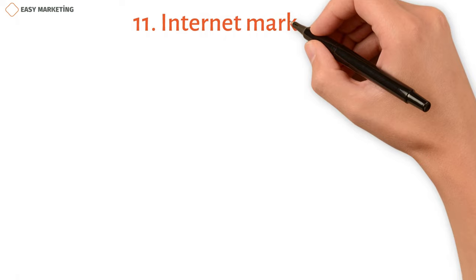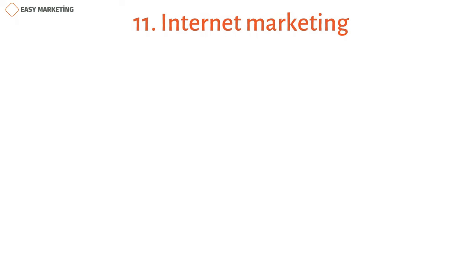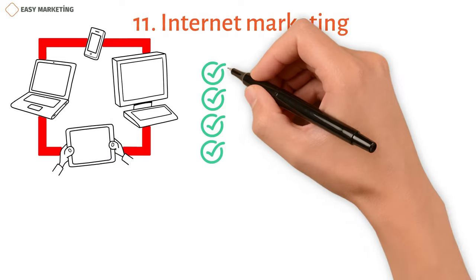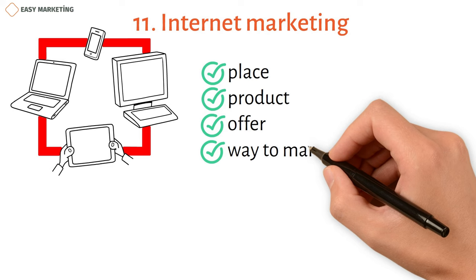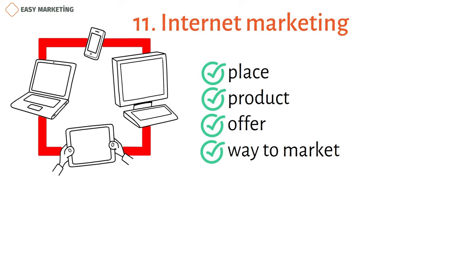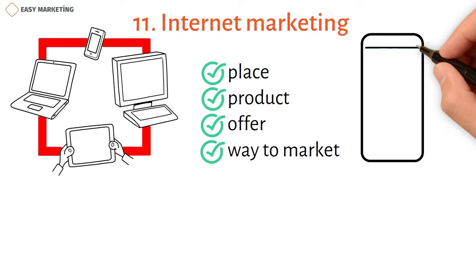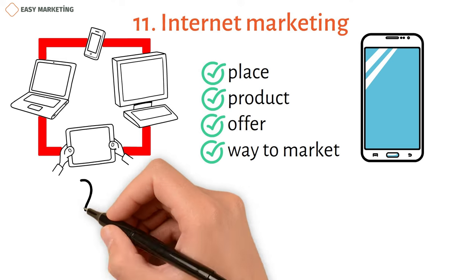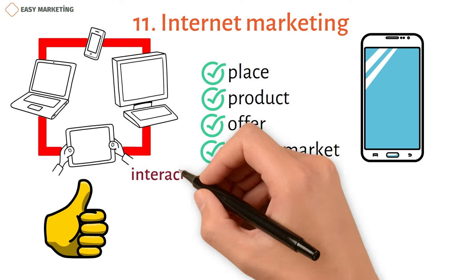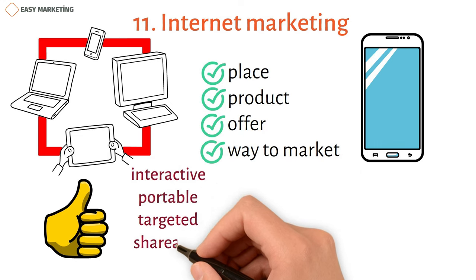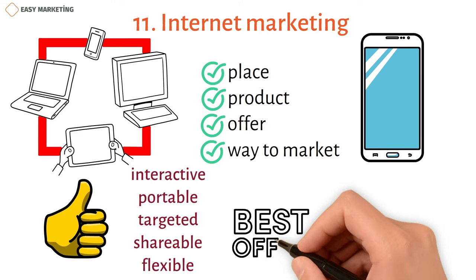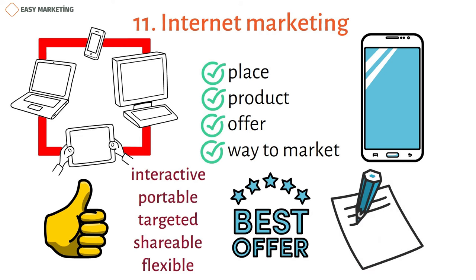Number eleven: digital/internet marketing. This kind of marketing communication is possible now that digital devices are a part of our lives. The best way to sell your goods is through cell phones — people forget to eat sometimes, but they never forget to look at their phones. Digital marketing is a good way to get your message out because it is interactive, portable, targeted, shareable, and flexible. With the help of digital marketing, you can make offers to specific customers and tailor the content of your ads to the people you want to reach.